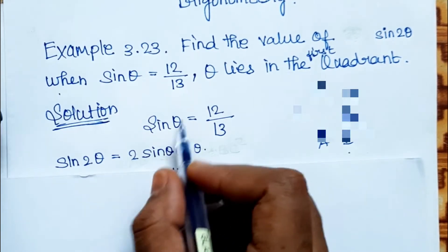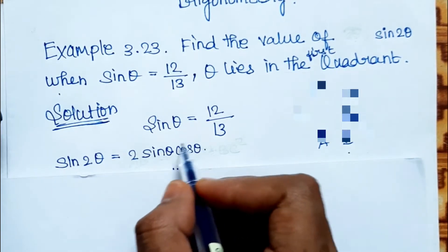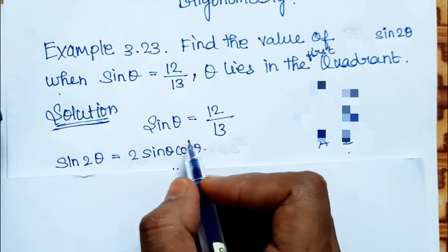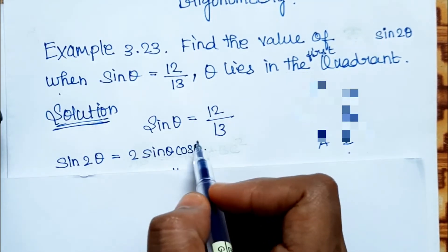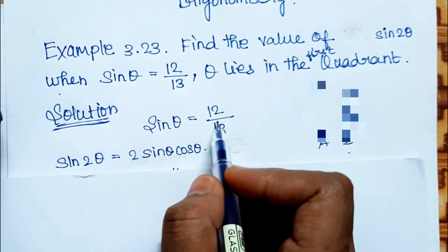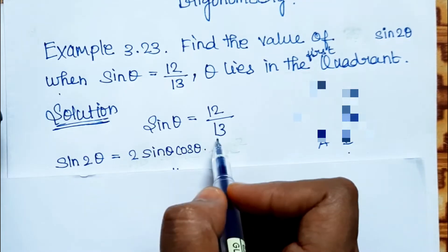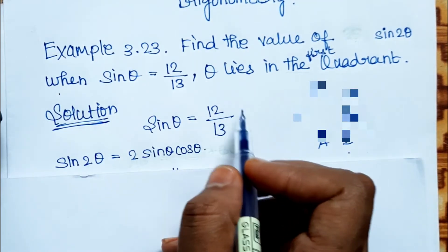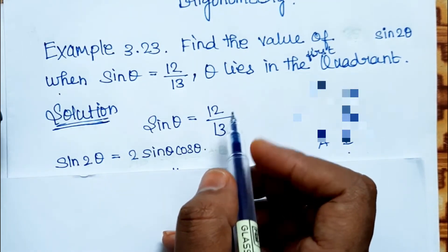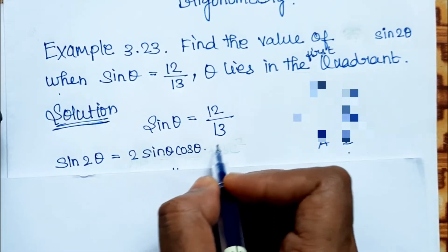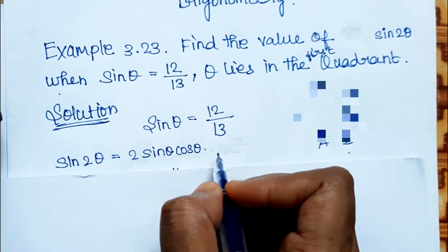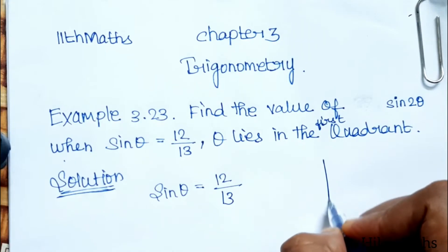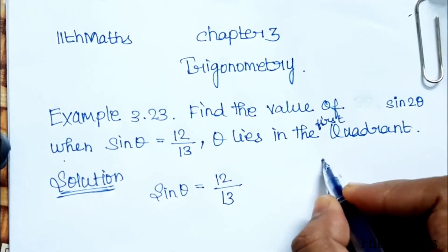Now sin θ is given. We need cos θ, which can be found using a right-angle triangle. sin θ equals opposite over hypotenuse, and cos θ equals adjacent over hypotenuse. Let's see how we build this right-angle triangle.